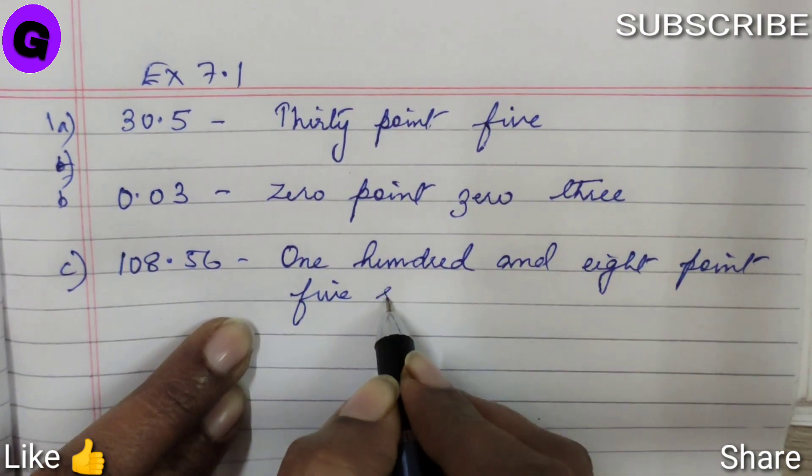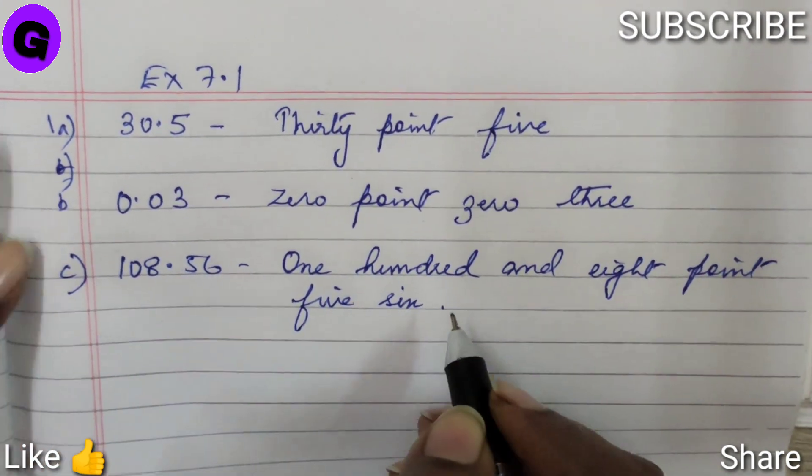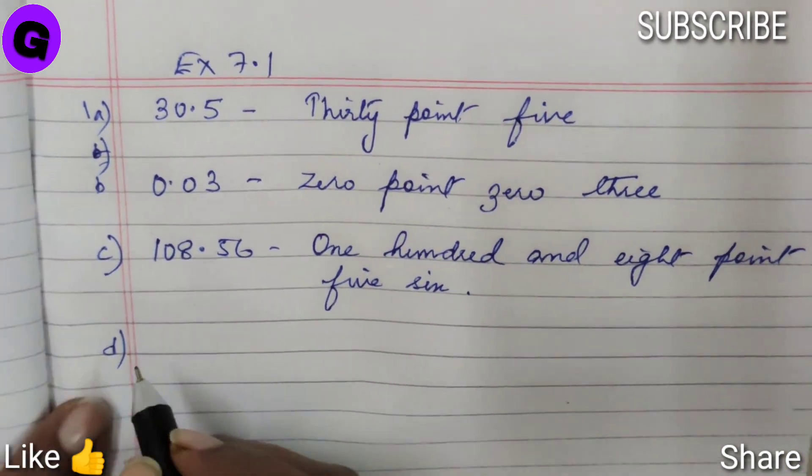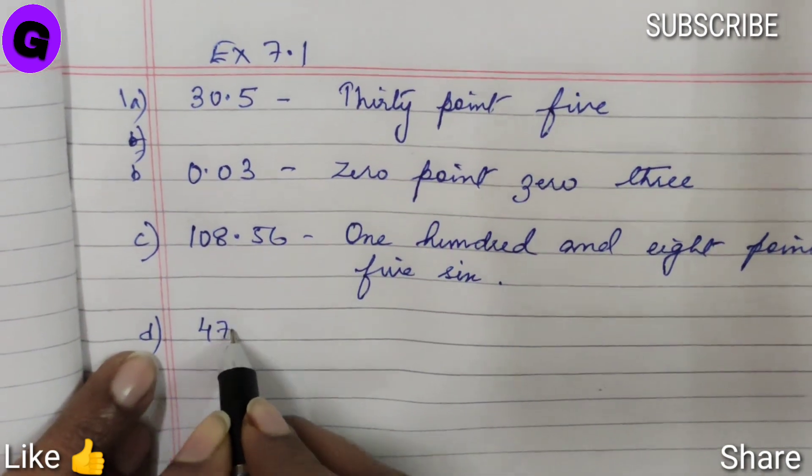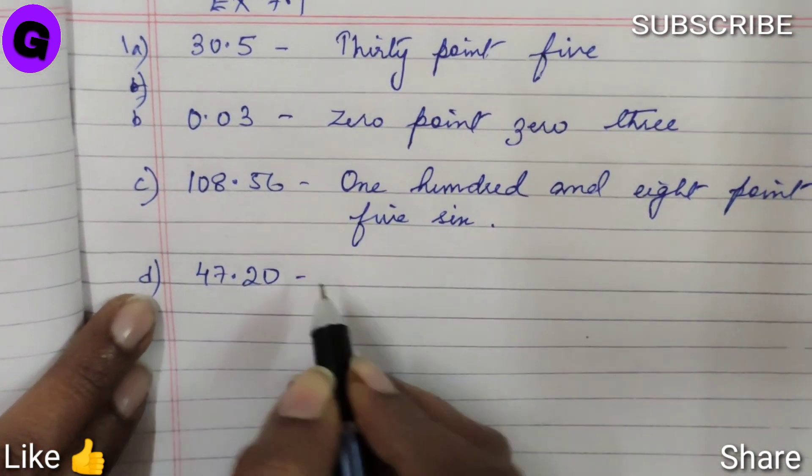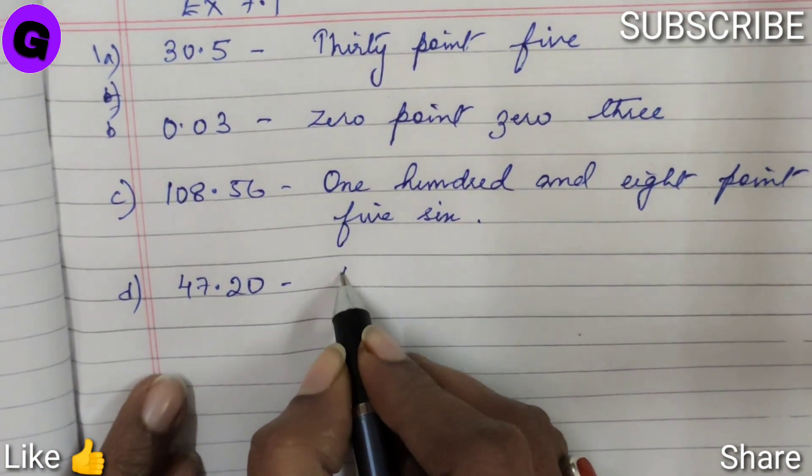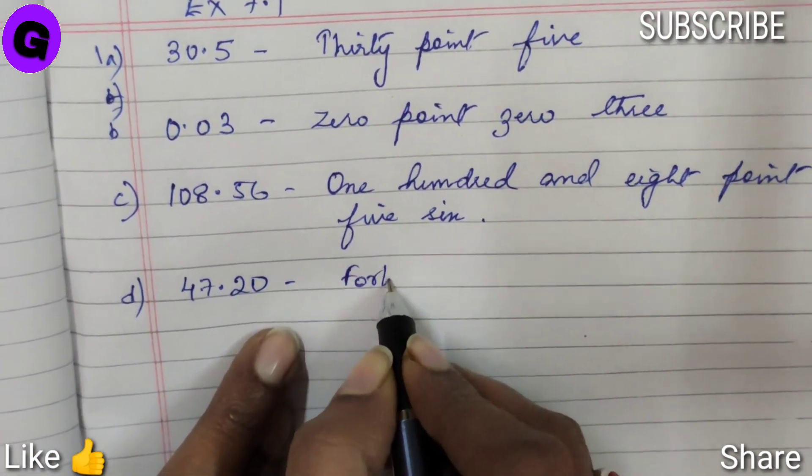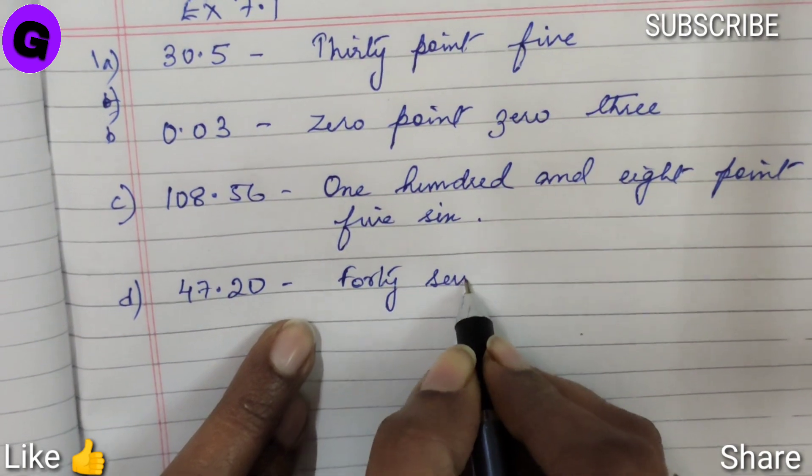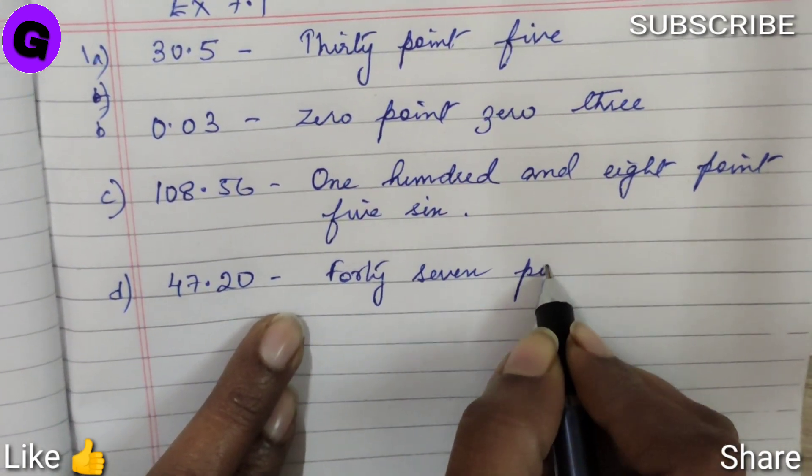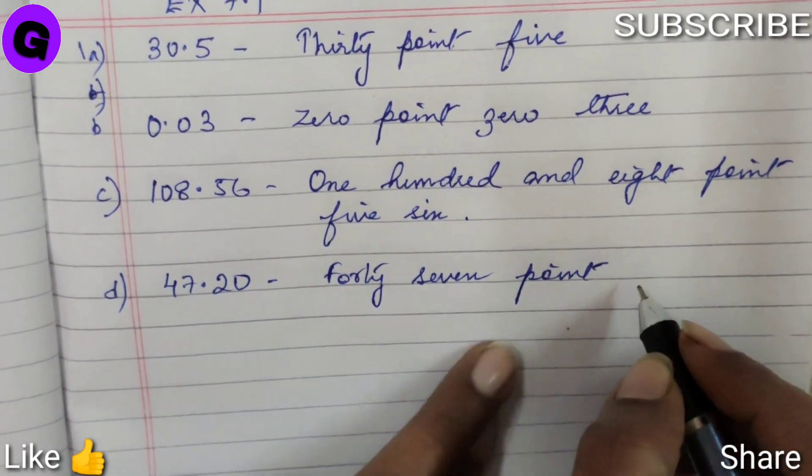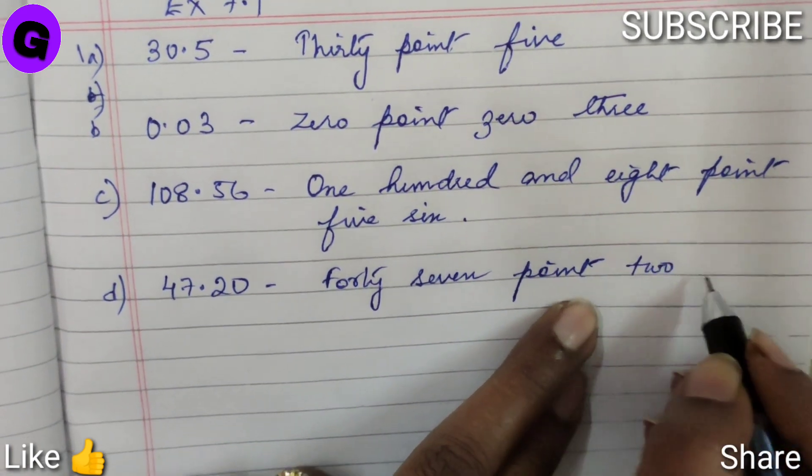108.56. Number D, 47.20, we will write 47.20.